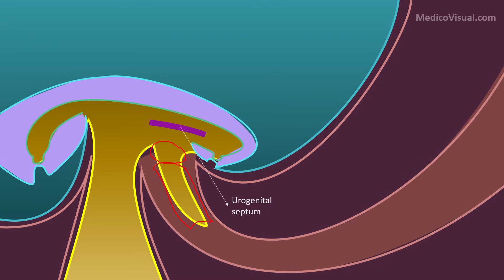The functions of allantois: one function is that it contributes towards the formation of the urinary bladder. The other part of allantois forms the thickened hollow tube called the urachus, which connects the apex of the urinary bladder to the umbilicus.